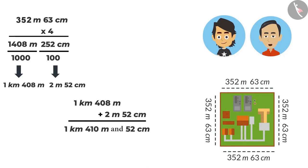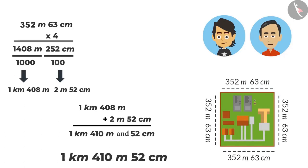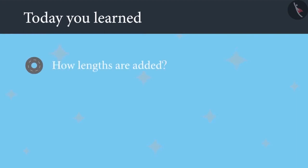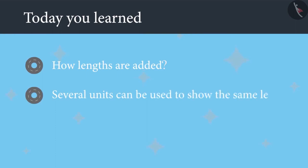Three or more units can also be used to write down and express length. The correct way of writing it is: 1 kilometer, 410 meters, 52 centimeters — meaning 1 kilometer and 410 meters and 52 centimeters. Today you learned how lengths are added and that several units can be used to show the same length.